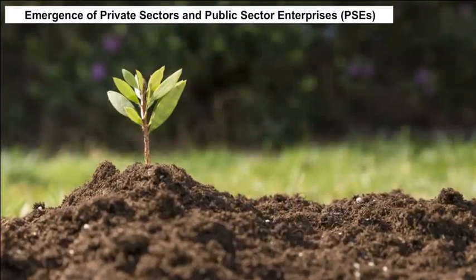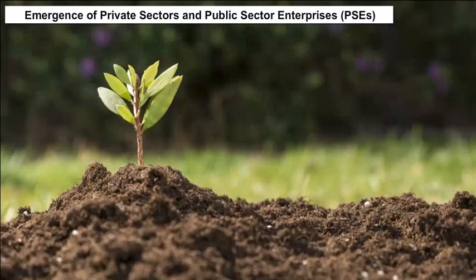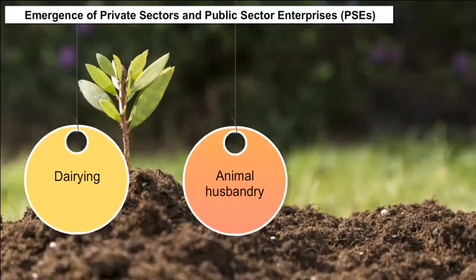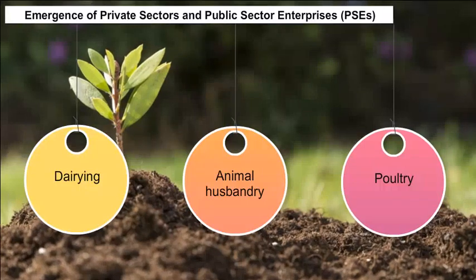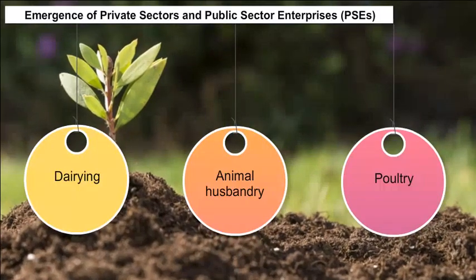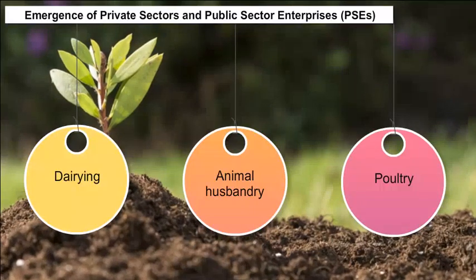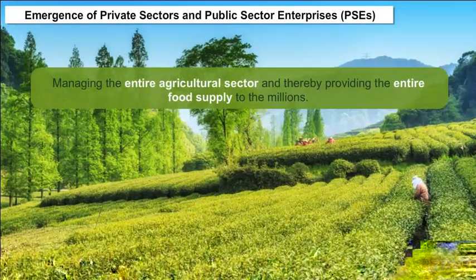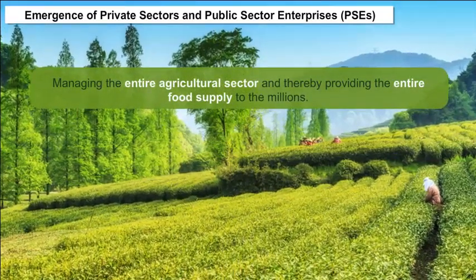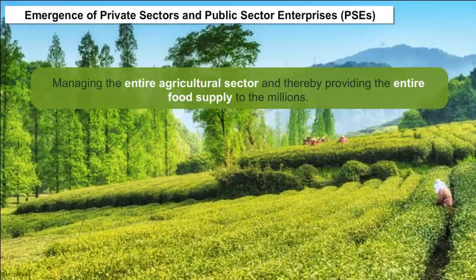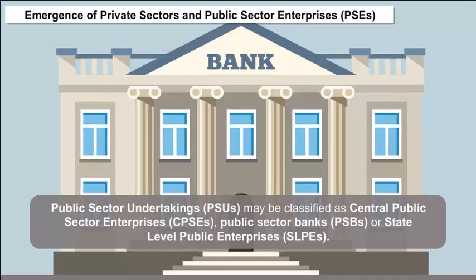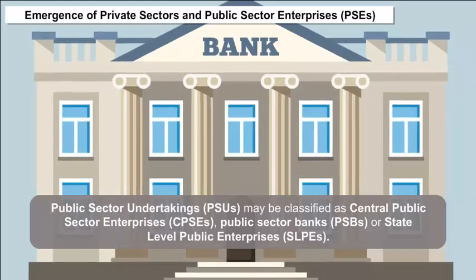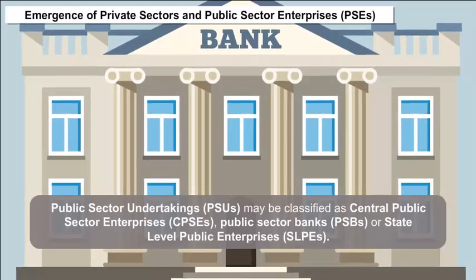Emergence of Private Sector and Public Sector Enterprises (PSEs): The most dominant sectors like dairying, animal husbandry, and poultry are totally under the control of the private sector. The private sector has played an important role in managing the entire agricultural sector, thereby providing food supply to millions. Public Sector Undertakings (PSUs) may be classified as Central Public Sector Enterprises (CPSEs), Public Sector Banks, and State Level Public Enterprises (SLPEs).